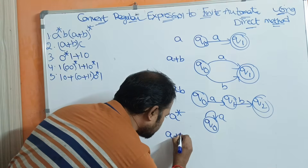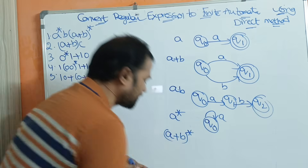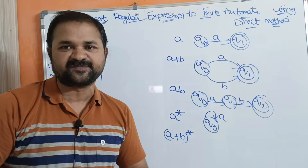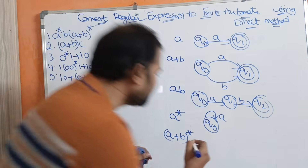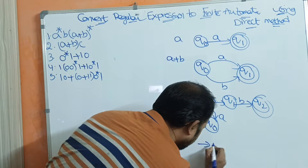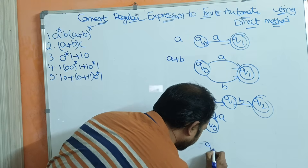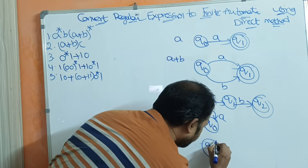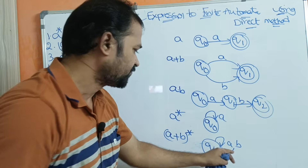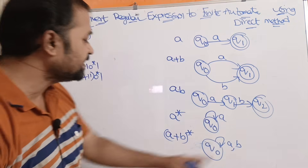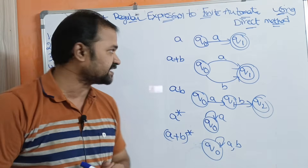Now let us see the next regular expression: (A plus B) whole star. A plus B means either A or B. So we simply write a self-loop. Let the current state be Q0. We write a self-loop on A comma B, meaning any number of A's or any number of B's. Q0 is both the initial and final state. This is the finite automata for (A+B)*.